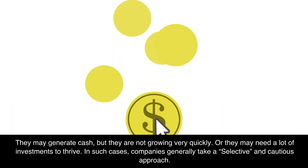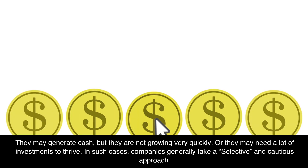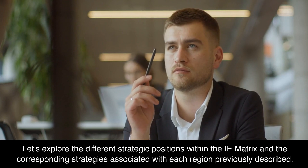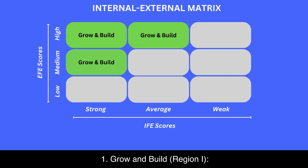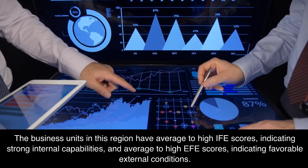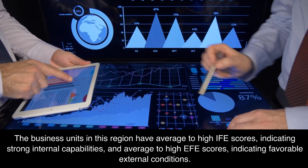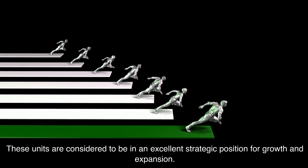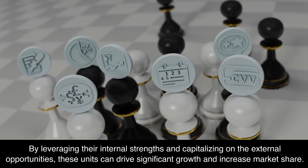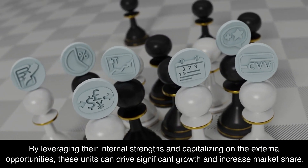In such cases, companies generally take a selective and cautious approach. Let's explore the different strategic positions within the IE matrix and the corresponding strategies associated with each region. Region one — grow and build: business units in this region have average to high IFE scores, indicating strong internal capabilities, and average to high EFE scores, indicating favorable external conditions. These units are in an excellent strategic position for growth and expansion. The strategies suitable for this quadrant include market penetration, market development, product development, horizontal integration, and forward integration.